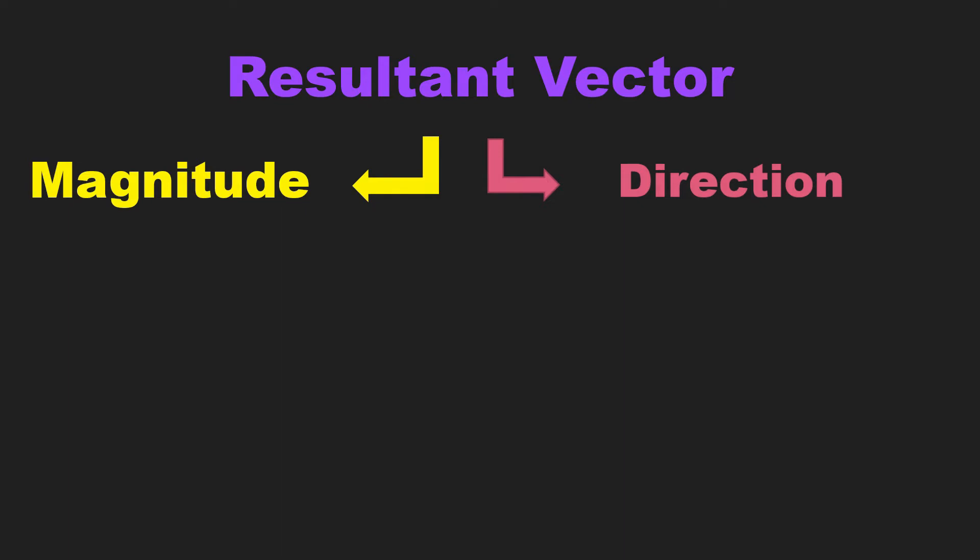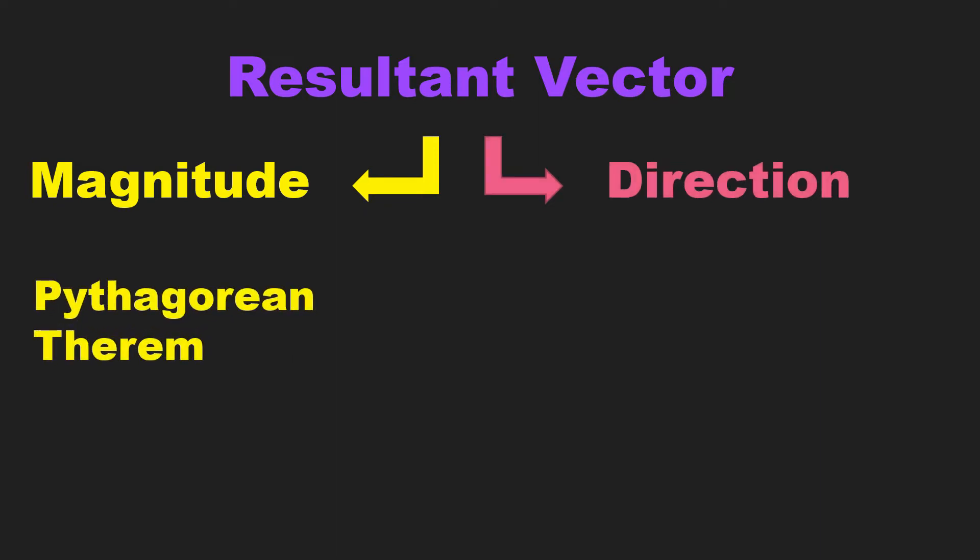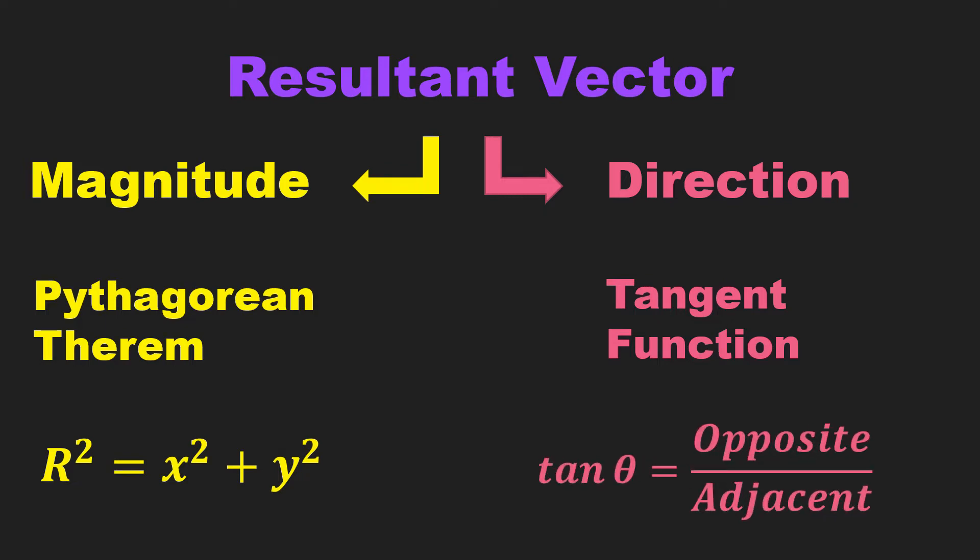To find the magnitude of the resultant vector, we will only use the Pythagorean theorem by squaring our x and y components. As for the direction, we will use trigonometric functions, mainly the tangent function, which uses the formula tangent theta is equal to opposite over adjacent sides.